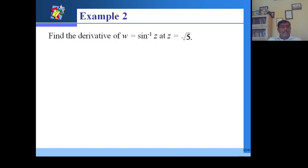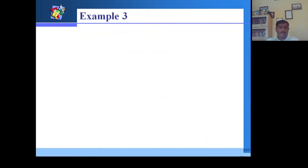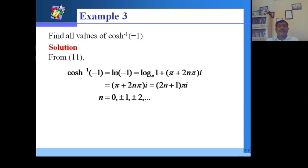Examples of derivative values at particular points such as z = √5 for sin⁻¹z are computed. The inverse hyperbolic functions sinh⁻¹z, cosh⁻¹z, and tanh⁻¹z are expressed similarly, and examples such as cos⁻¹(-1) are evaluated using these formulas.